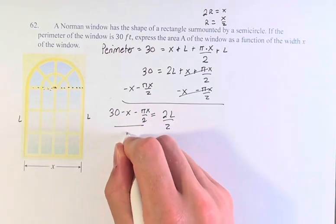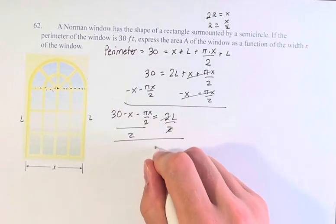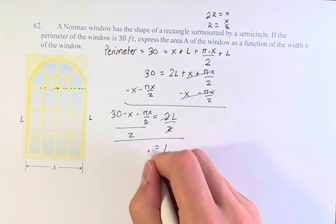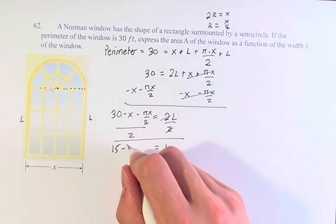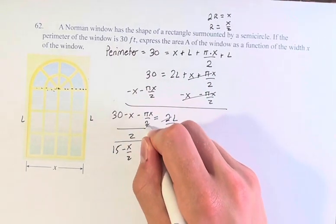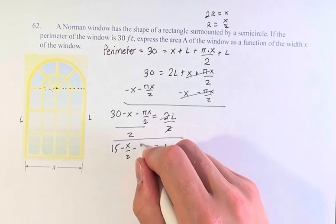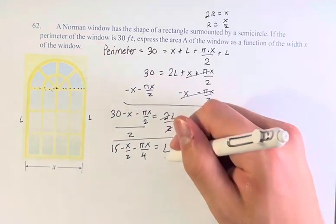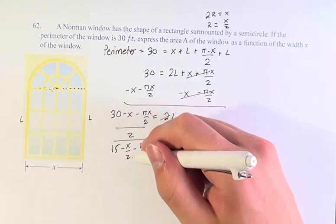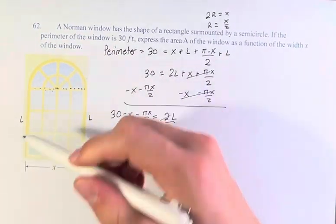Dividing for L, these cancel. The length L is equal to 30 divided by 2 is 15, minus x over 2, minus pi x over 4. So now we have this length in terms of the width x.